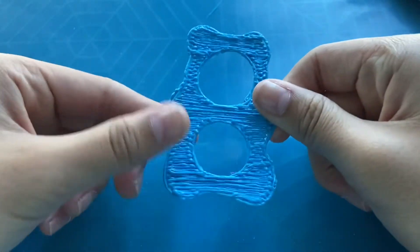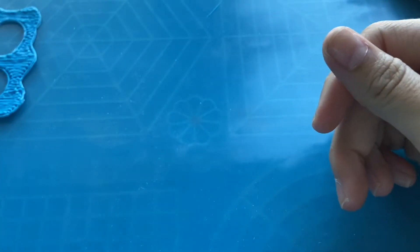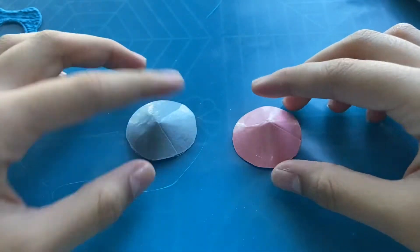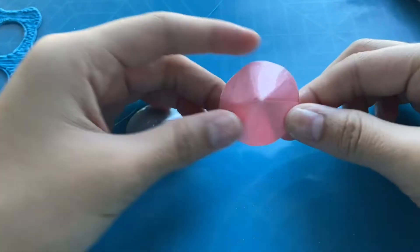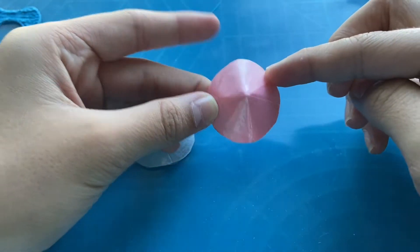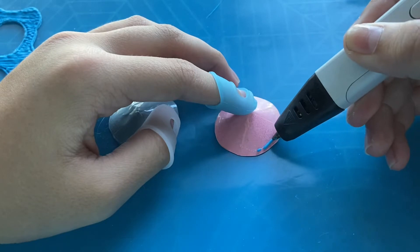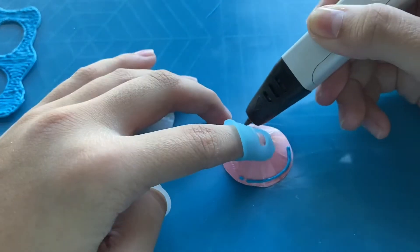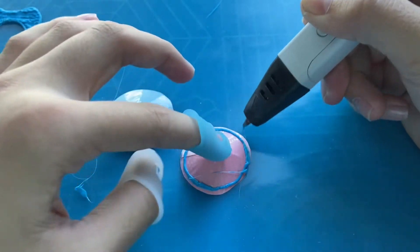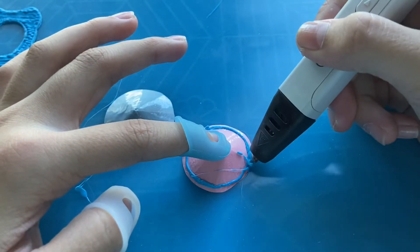So once you have this, you're going to want to set this aside. And go ahead and grab your little cones again. And we're going to take our pen and draw an outline around the edge. So I'll show you what that looks like. Then after this, you're just going to want to fill it in.